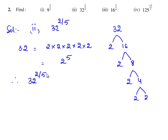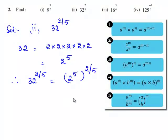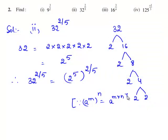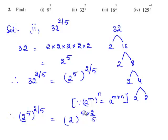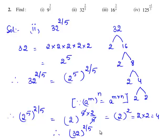Therefore, 32 raised to the power of 2 by 5 is written as 2 raised to the power of 5, whole raised to the power of 2 by 5. As we know, a power m whole power n is written as a power m times n. Therefore, 2 power 5 raised to the power of 2 by 5 equals 2 whole power 5 times 2 by 5. The common factor of 5 in the exponent gets cancelled and we are left with 2 to the power 2, which is 2 times 2 equals 4. Therefore, 32 raised to the power of 2 by 5 is equal to 4.